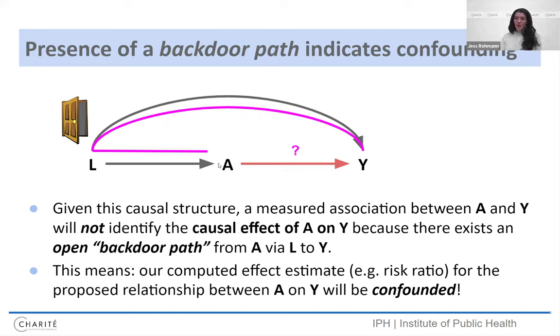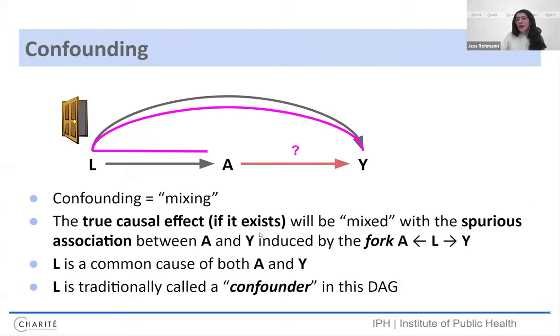So to the question, can we estimate the causal effect of A on Y given the DAG if we do nothing? Well, if we go backwards through this so-called open backdoor path, this means that the measured association between A and Y will not identify the causal effect because there's this problem variable L. And so if we just compute a risk ratio, let's say an odds ratio, a risk difference, whatever that effect estimate may be, we will have a confounded effect estimate because it's going to be a mixing of the true causal effect of interest if there is one and this confounding via the variable L. So this is why DAGs are really neat. They can show us confounding really quickly. If you see the structure where there's this common cause of the exposure and the outcome, the alarm bell can go off. Here's some confounding happening.